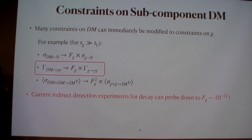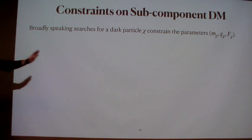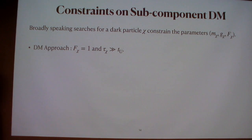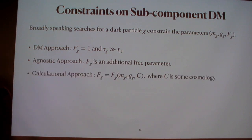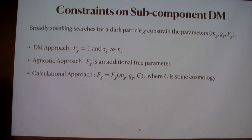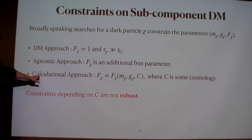In general, we can put constraints on mass, coupling, and fractional abundance. There are roughly three approaches: the dark matter approach (assume chi is dark matter), the agnostic approach (treat f-chi as a free parameter), and the calculational approach (calculate the specific fractional abundance assuming some cosmology). In some cases this is independent of cosmological history — for example, dark photons are produced in the low-temperature regime, roughly independent of cosmology before BBN. But sometimes they depend on cosmology, and any constraints using the calculational approach for a given cosmology are not robust if cosmology changes.